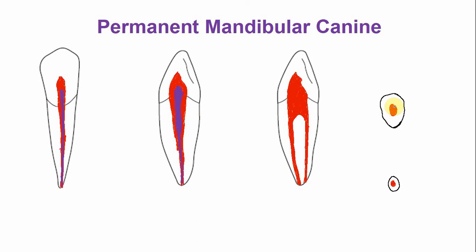In the cross section as well, at the cervical area the size of the pulp canal is reduced, and in the apical area as well. The labiolingual dimension is more as compared to the mesiodistal dimension.